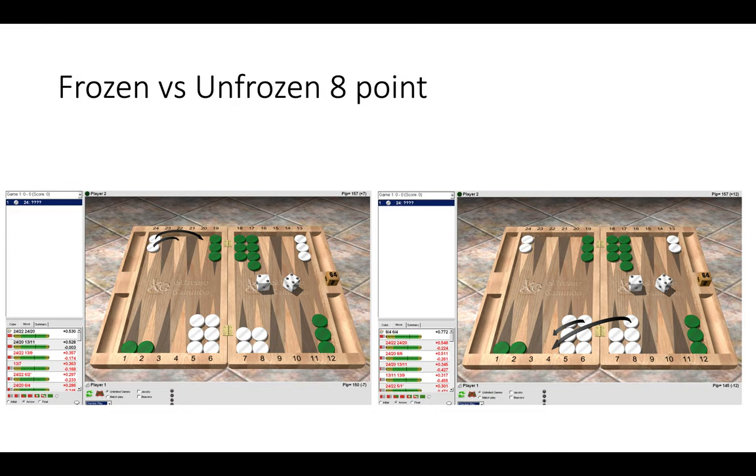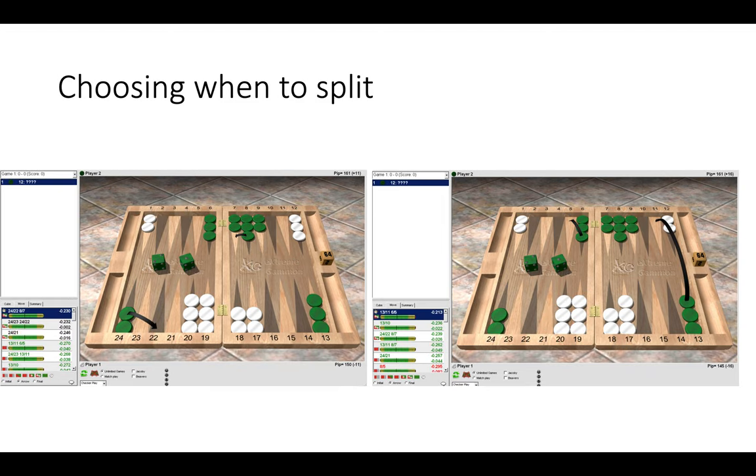By green splitting, it's preventing white making points in the homeboard. Also, if green was on roll, you could decide when to split looking at your opponent's builders and whether or not you're freezing his points.